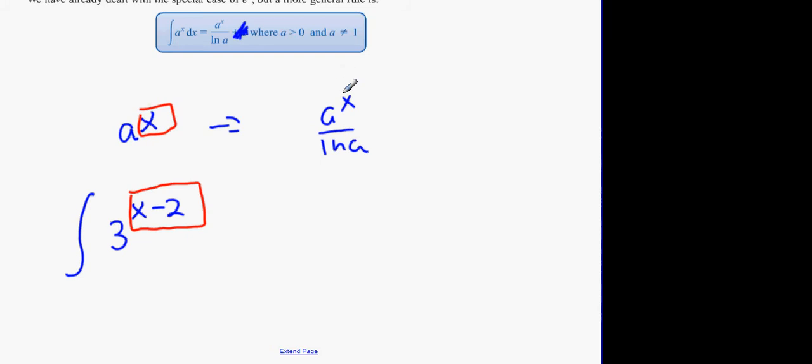And then ln. Whatever is in the box goes on top. And then whatever the number is, the base number is, goes beside the ln. That's the way these ones work. Let me show you an example. This one here. Follow the formula rigidly.